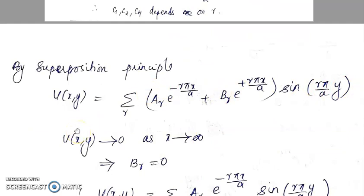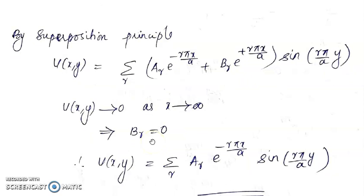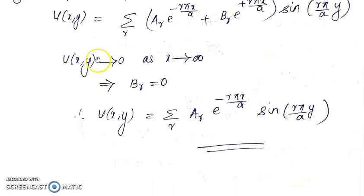Now applying the third condition: as x → ∞, v(x,y) → 0. The term e^(rπx/a) grows without bound as x → ∞, so for the condition to hold, Bᵣ must equal 0. Therefore the required solution is v = Σᵣ Aᵣe^(−rπx/a)·sin(rπy/a). That is the required solution. Thank you.